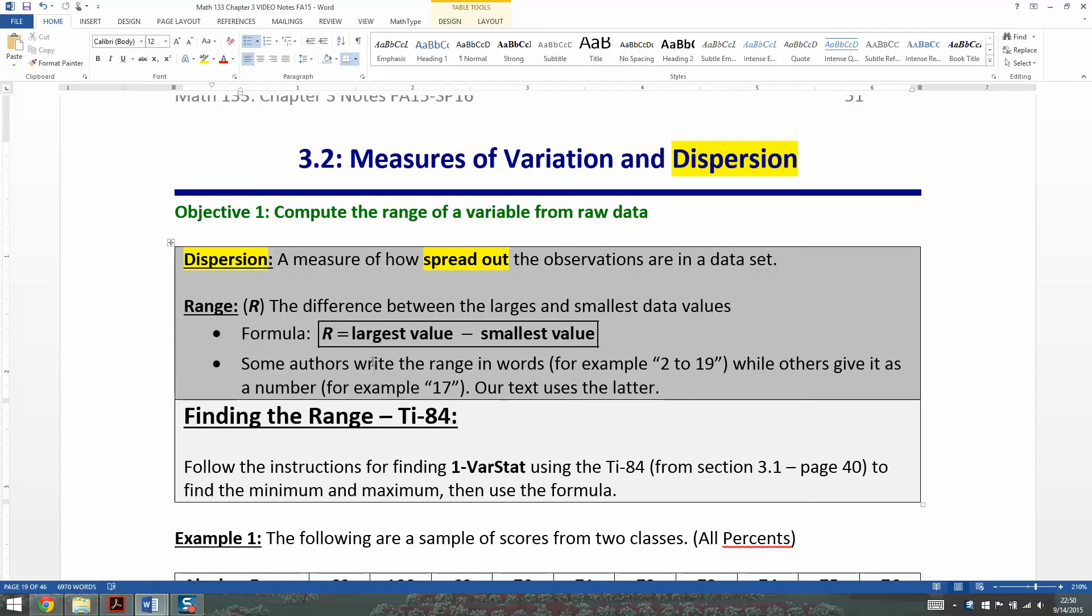We want to come up with a couple measures of that dispersion. The first measure is the range. The range, capital R, is the difference between the largest and smallest data values. The formula is: capital R equals largest minus smallest, or another way to say it is max minus min, your maximum minus your minimum.